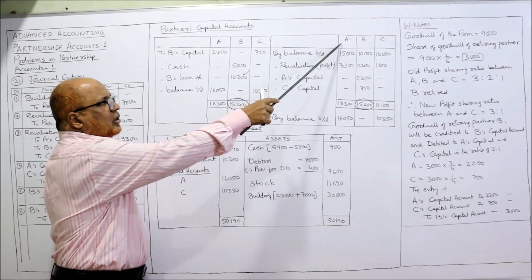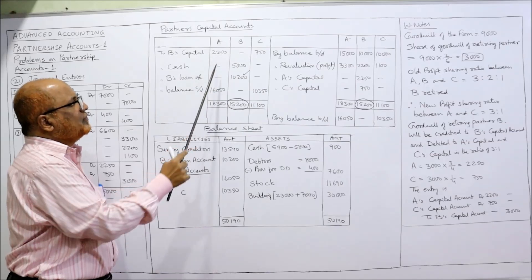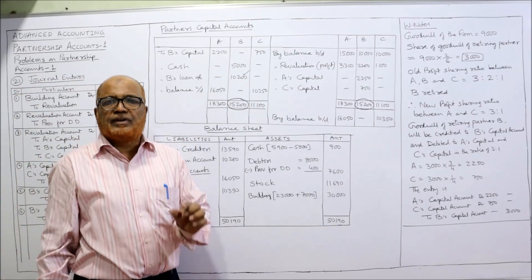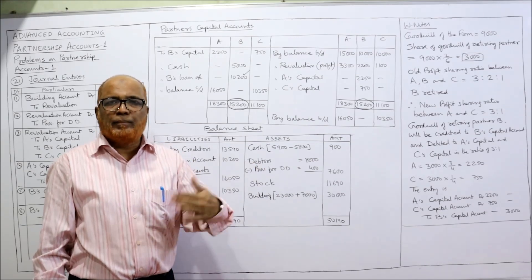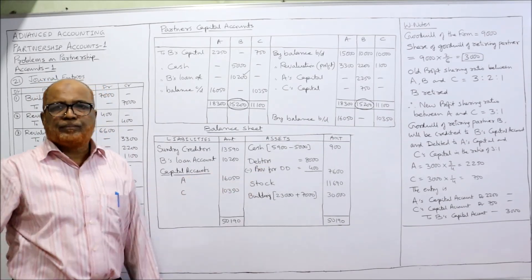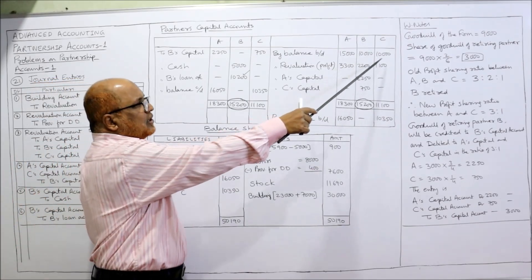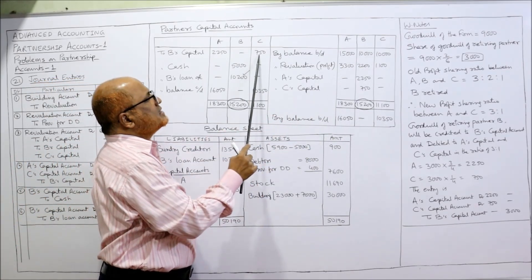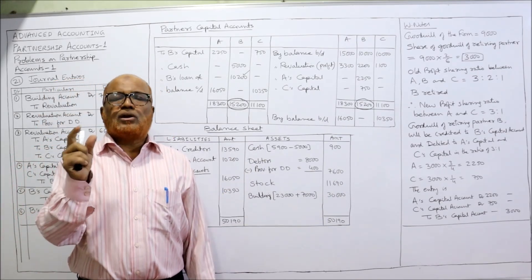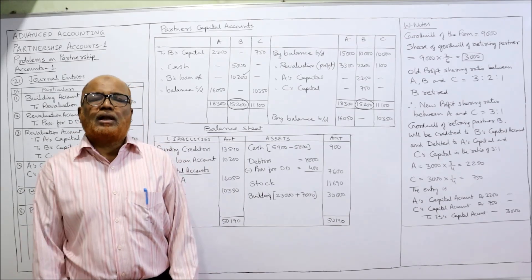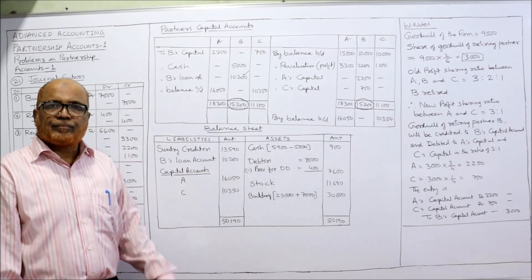Now for A and C: total on the credit side of A is 18,300. From 18,300 deduct 2,250 = 16,050, which is A's capital after retirement of B and all adjustments. Similarly for C: total on credit side is 11,100. 11,100 minus 750 = 10,350, which is C's capital after all adjustments. These capitals of A and C will appear in the new balance sheet.